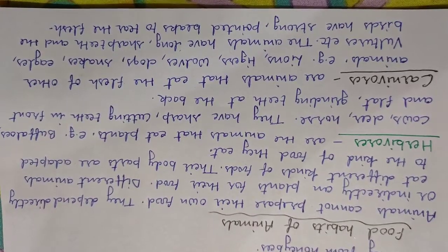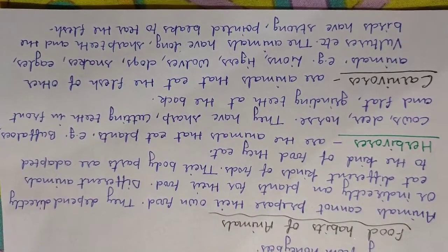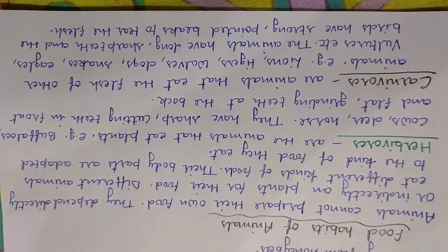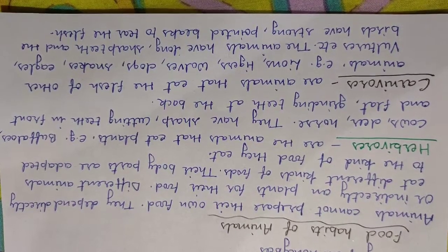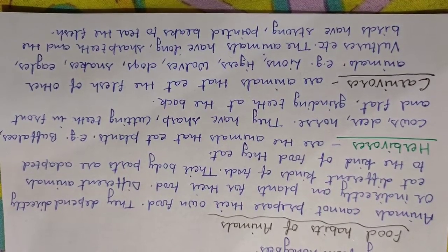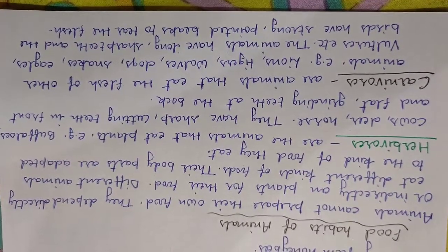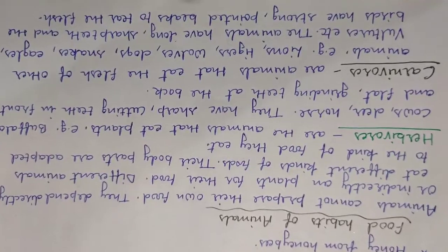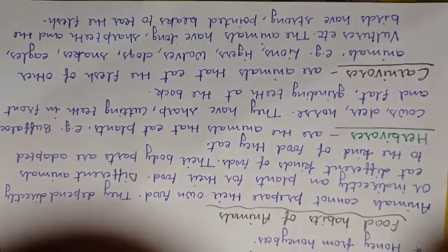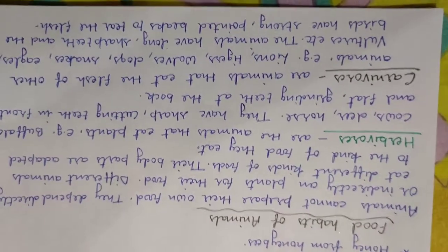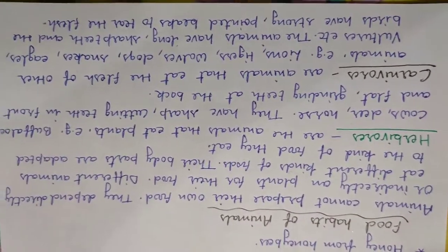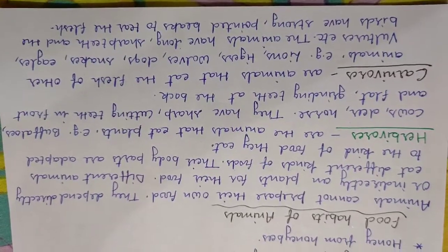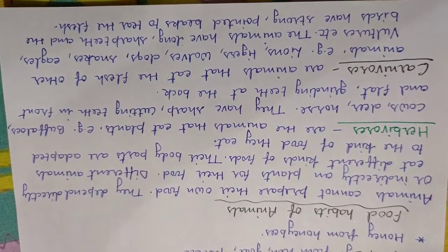The topic is food habits of animals. Animals cannot prepare their own food — they depend directly or indirectly on plants for their food. Different animals eat different kinds of food. For example, cows, buffaloes, and deer eat grass, while cats and lions eat the flesh of other animals.